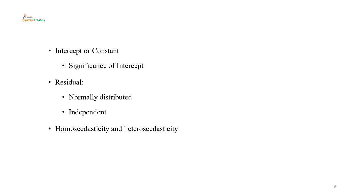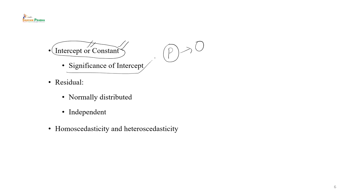अगला concept है intercept या constant। intercept या constant वो value है हमारे dependent variable अर्थात criterion variable की, जब हमारे predictor variable की value 0 हो। यदि predictor variable की value 0 हो उस समय criterion की जो value होती है उसे हम intercept या constant कहते हैं। हमारे intercept का interpretation बहुत important है और इसे regression line draw करते समय discuss करना easy होगा।